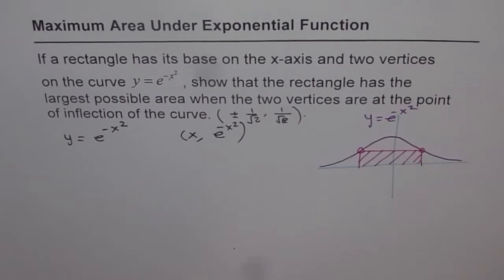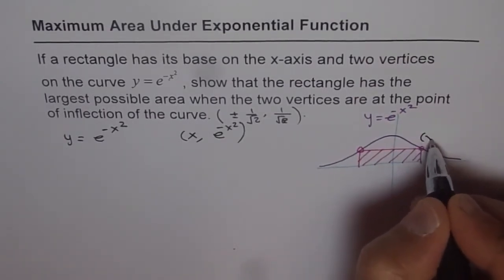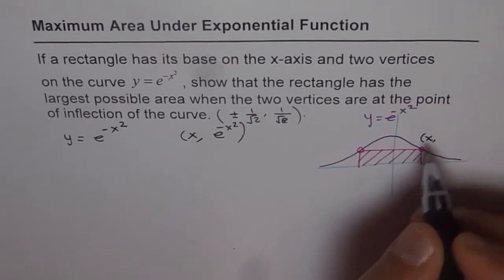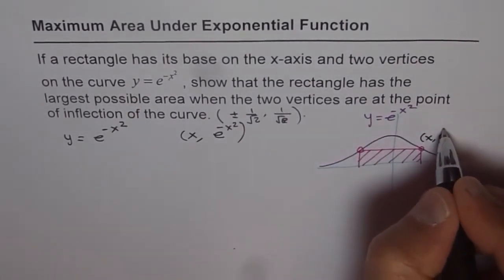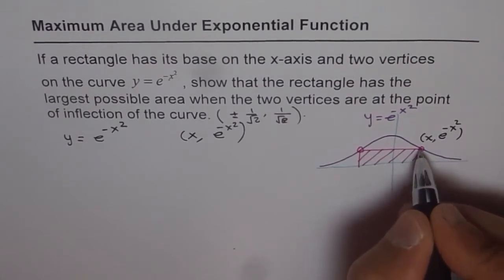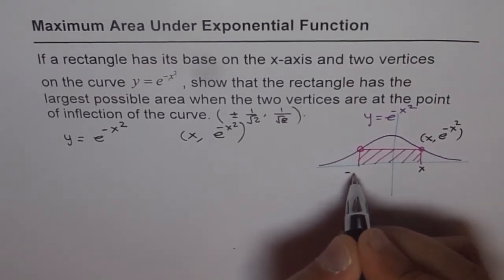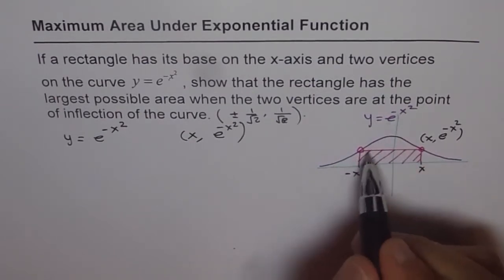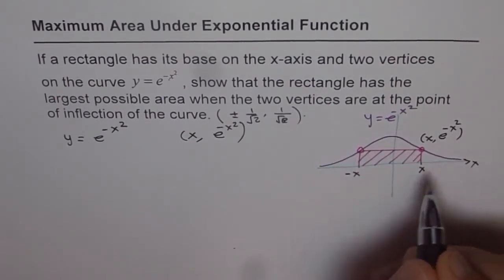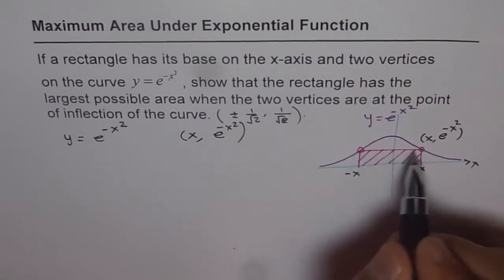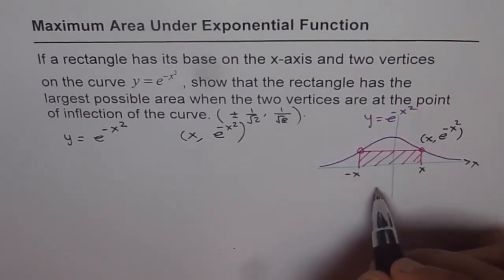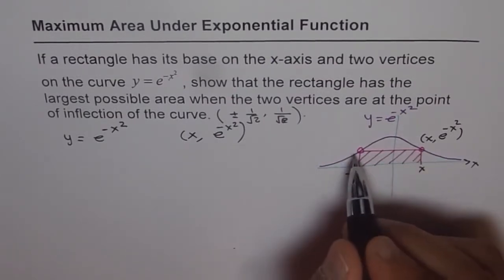We don't know what those points are yet, so we'll let any general point be x with y-coordinate. Since the point on the curve is x, the y value is e to the power of minus x squared. If one vertex is at x, then the other is at minus x. This function is even — it is symmetric about the y-axis — so these points will be mirror images. In further analysis, we'll only analyze one point and assume symmetry.